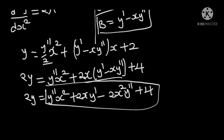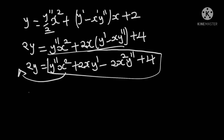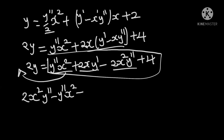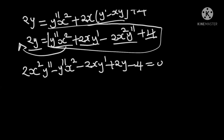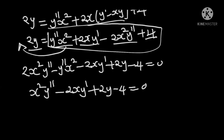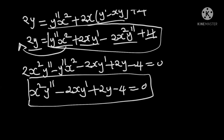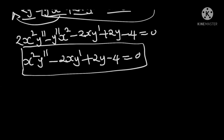Taking all terms to the other side, starting with the term with y double prime: 2x squared y double prime minus y double prime x squared, which equals x squared y double prime, minus 2xy prime, plus 2y, minus 4, equals 0. So x squared y double prime minus 2xy prime plus 2y minus 4 equals 0. And this is the required ordinary differential equation associated with this primitive equation.